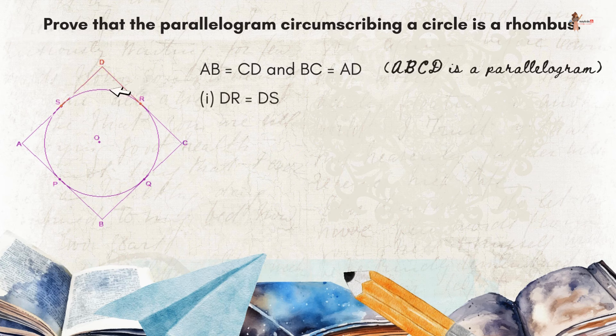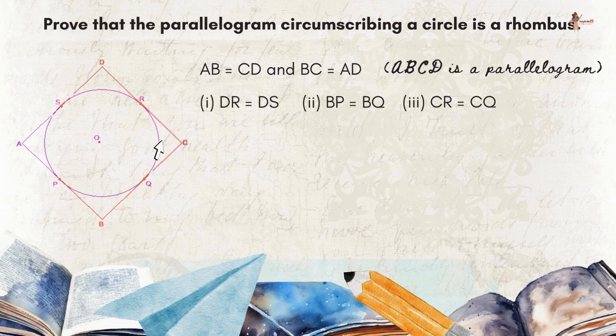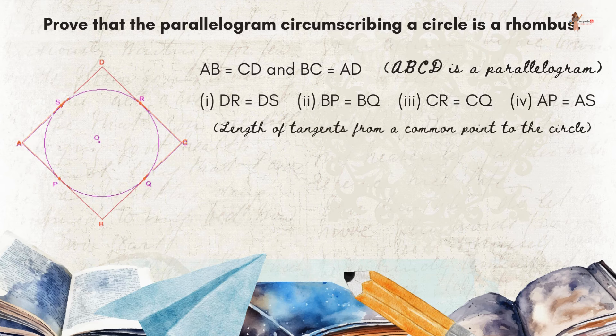Now DR is equal to DS, BP is equal to BQ, CR is equal to CQ, and AP is equal to AS. Why? Because lengths of tangents from a common point to the circle are equal.